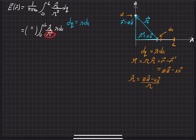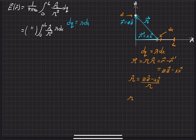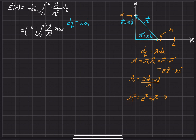Now we attack what r is. Looking at this as a triangle, if one leg is z and the other leg is x, then by the Pythagorean theorem, r squared equals z squared plus x squared. Solving for the separation vector magnitude, r equals the square root of z squared plus x squared.